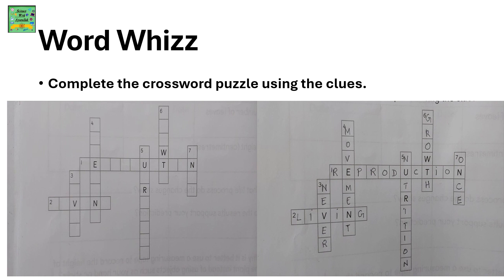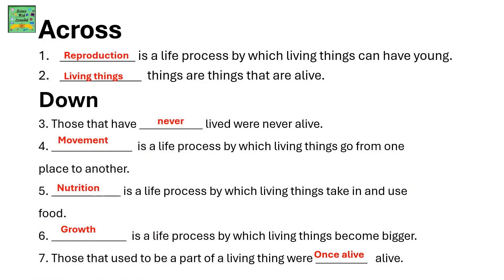Word Wiz: Complete the crossword puzzle using the clues. The crossword has been completed and you can check the answers. Reproduction is a life process by which living things can have young. Living things are those that are alive. Those that have never lived were never alive. Movement is a life process by which living things go from one place to another. Nutrition is a life process by which living things take in and use food. Growth is a life process by which living things become bigger. Those that used to be part of a living thing were once alive.